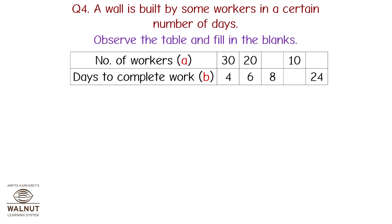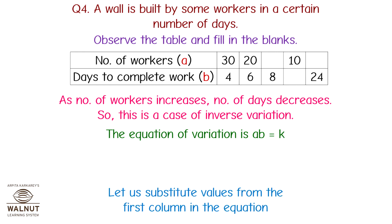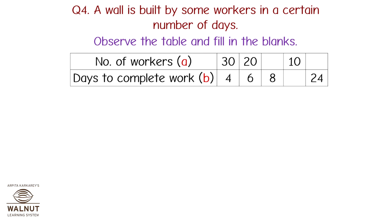A wall is built by some workers in a certain number of days — observe the table and fill in the blanks. As the number of workers increases, the number of days decreases, so this is inverse variation. The equation of variation is AB = K. Substituting from the first column: 30 × 4 = K, so K = 120. The equation of variation is AB = 120.